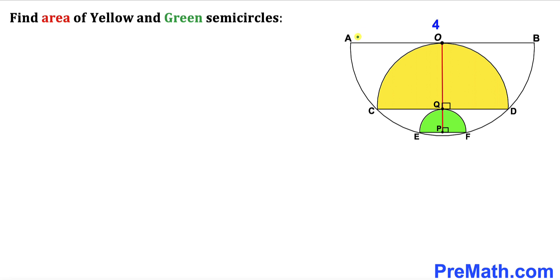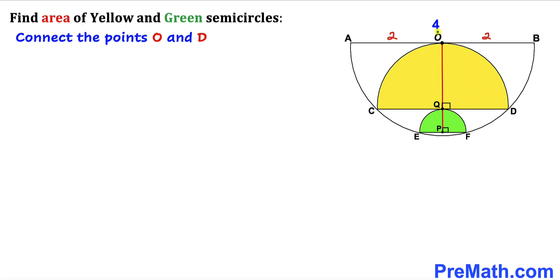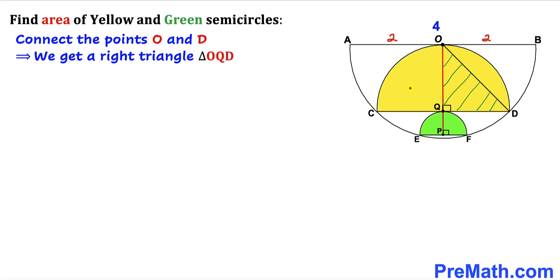Here's our next step. We know that AB is the diameter of this big semicircle and that is 4 units. So therefore radius AO and radius OB are going to be 2 units each. Now let's go ahead and connect points O and D. As you can see in this next diagram, we get right triangle ODQ. This side length OD represents the radius of this big semicircle, so this is going to be simply 2 units.